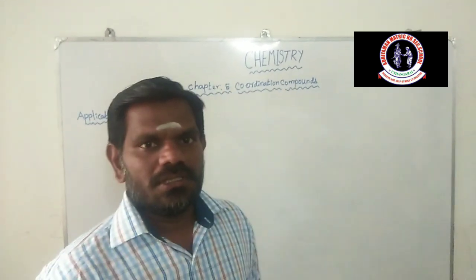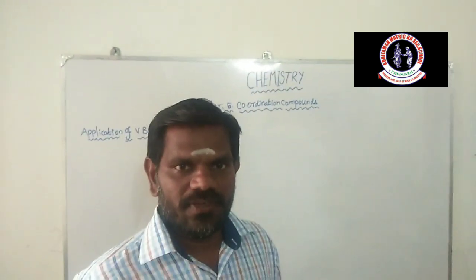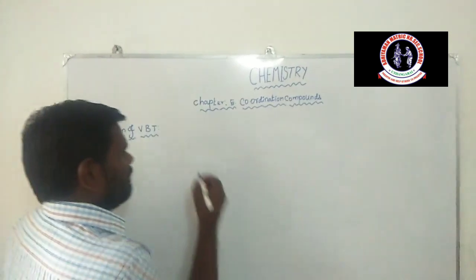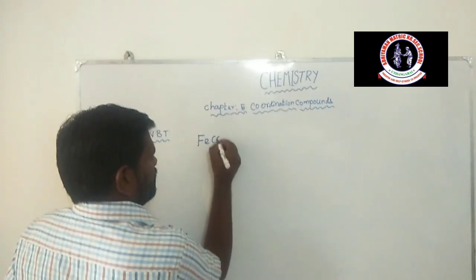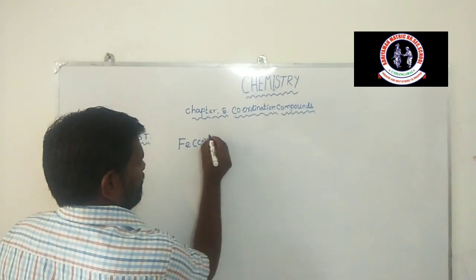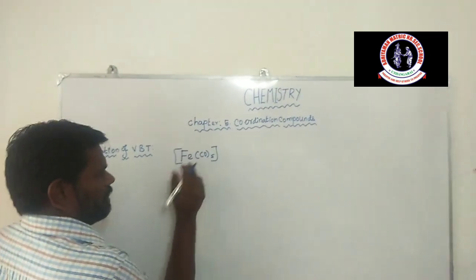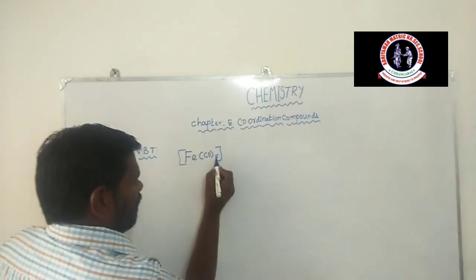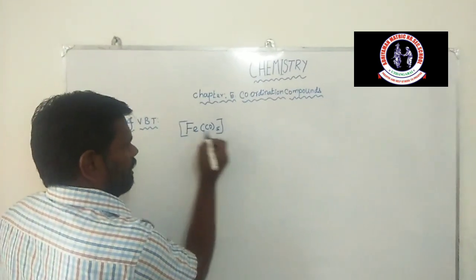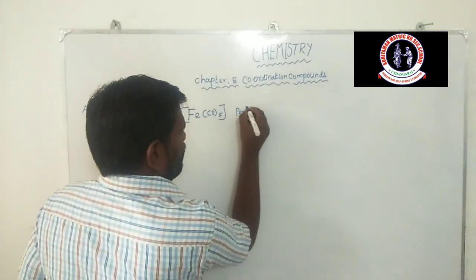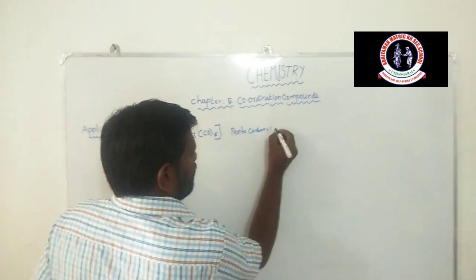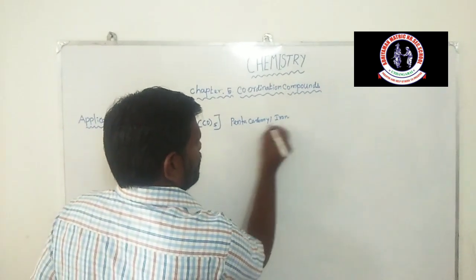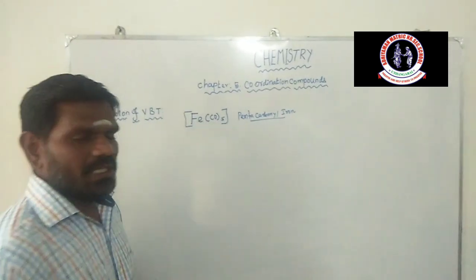Today we are going to discuss strong field ligands. The complex is Fe(CO)5. The name of the complex is pentacarbonyl iron. Pentacarbonyl iron is a complex.